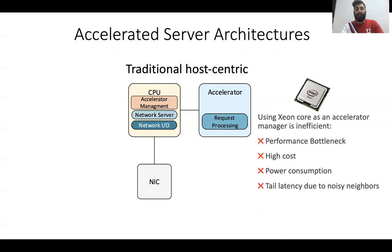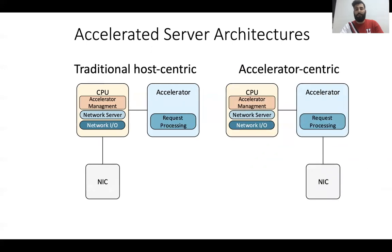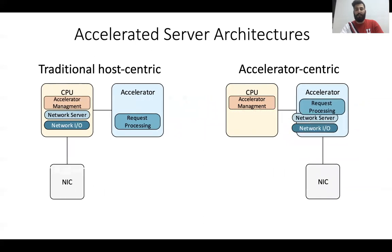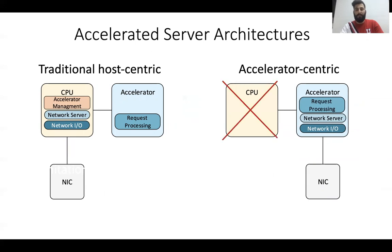This architecture also suffers from high tail latency because the network server and the accelerator manager running on the CPU share the same resources — for example, the last level cache — with other applications running on the CPU, which leads to interference. So for these kinds of applications, we would rather use the accelerator-centric architecture, where the network server logic is moved to the accelerator, accelerator management is not needed anymore, and the CPU will not be used.